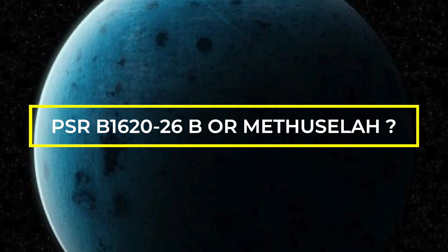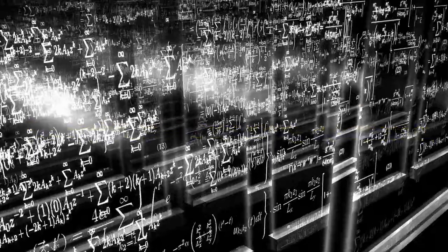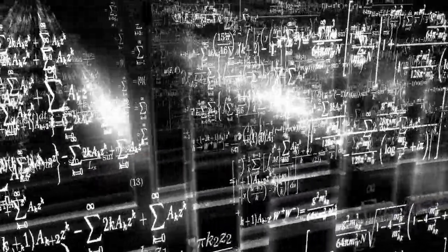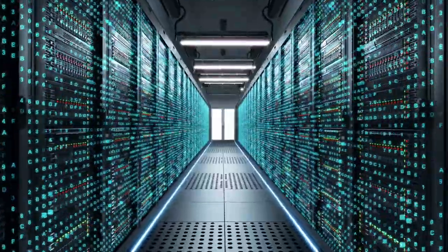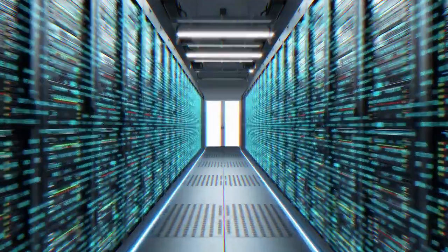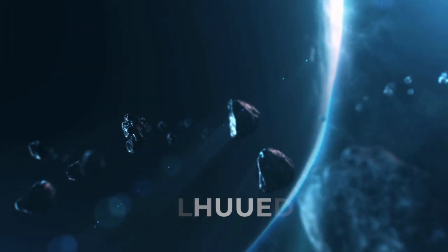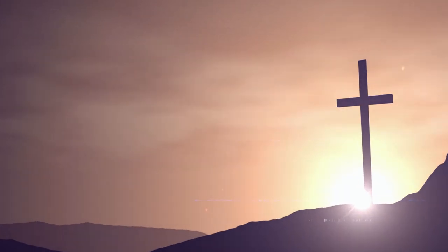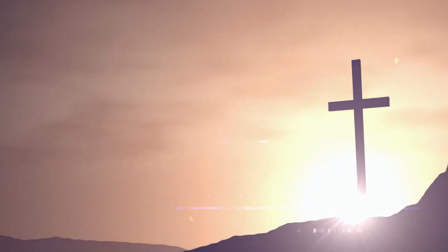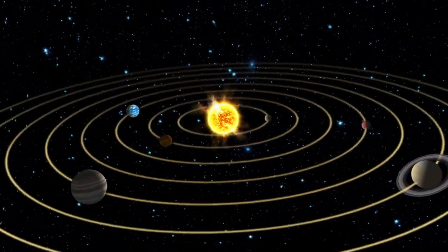The designation PSR B1620-26b for the planet is not used in any scientific work. However, in the Simbad database, the planet is listed as PSR B1620-26b. Even if it is not officially recognized, the name Methuselah is often used for the planet. The name goes back to the biblical person Methuselah, who was the oldest person who ever lived in Christianity. This name is therefore used to make parallels with the planets of the solar system. Methuselah is also the only planet that bears a name from the Bible.